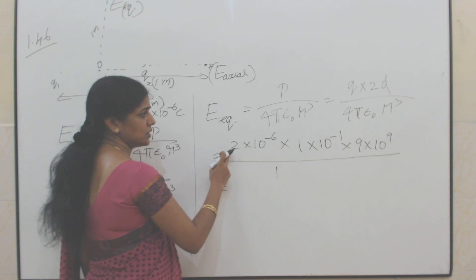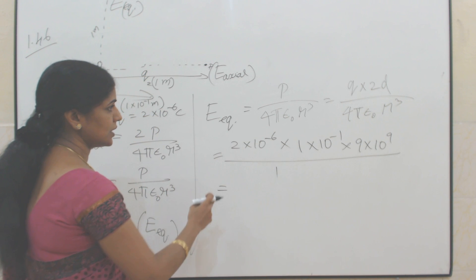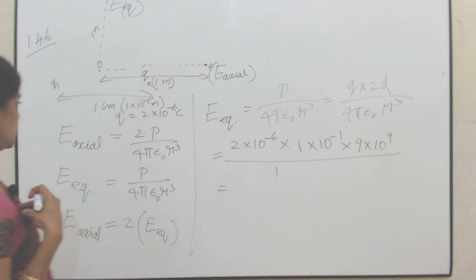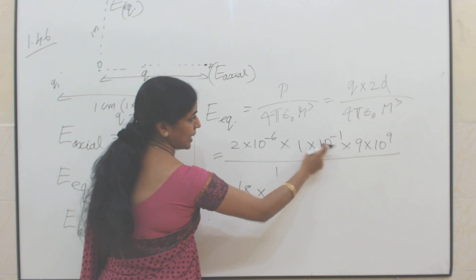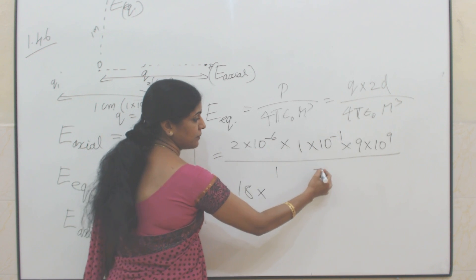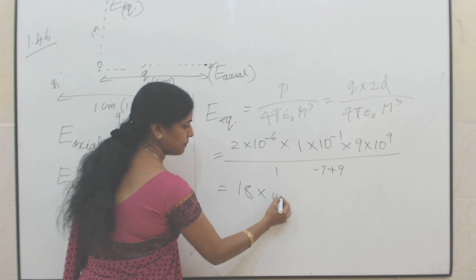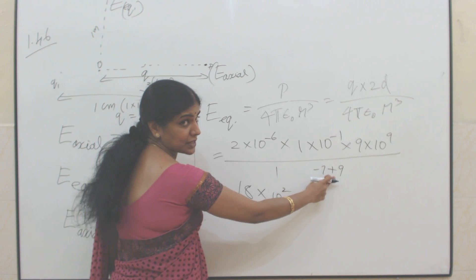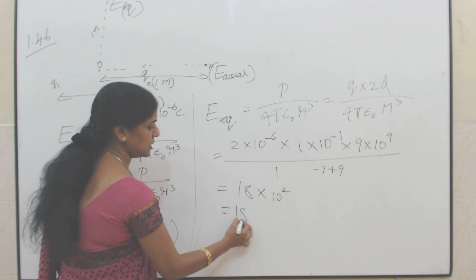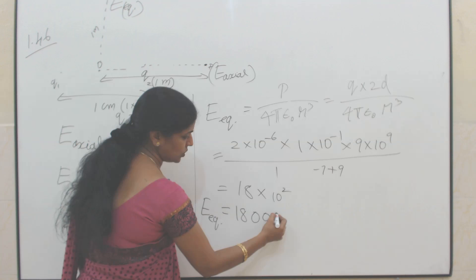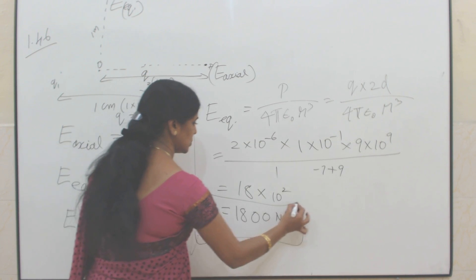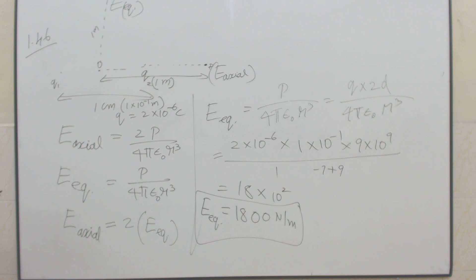Multiplying all the values: 9×10⁹ × 2 × 2×10⁻⁶ × 1×10⁻² gives exponents: 10⁻⁶ × 10⁻² = 10⁻⁸, and 10⁻⁸ × 10⁹ = 10¹. So the result is 9 × 2 × 2 × 10¹ = 18 × 10¹ = 180 N/C. The electric field at a point on the equatorial line is 180 N/C.